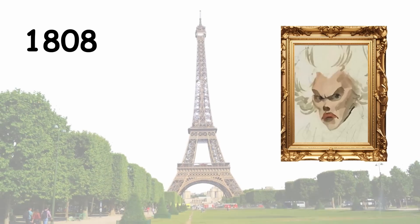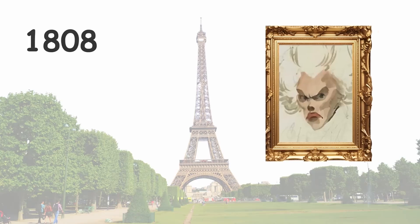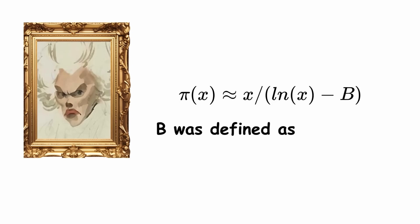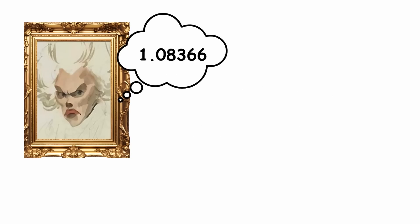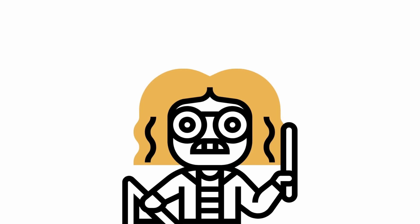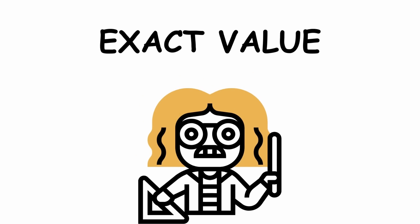In 1808, French mathematician Adrien-Marie Legendre found a good approximation for the function: pi of x is approximately x over the natural log of x minus b, where b was defined as 1.08366. This value of b was only a guess on Legendre's part for the optimal value. Later, mathematicians sought to obtain the exact value of b that would give the best possible approximation.